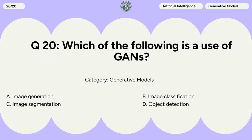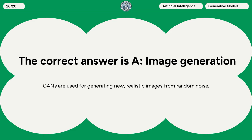Question 20. Which of the following is a use of GANs? A. Image Generation. B. Image Classification. C. Image Segmentation. D. Object Detection. The correct answer is A: Image Generation. GANs are used for generating new, realistic images from random noise.